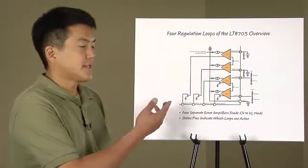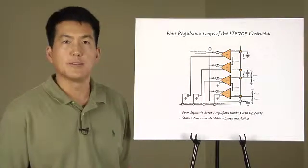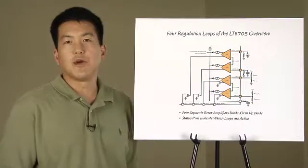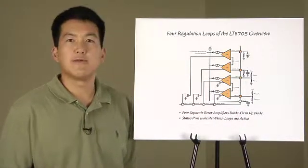Open drain status pins indicate which feedback loops are active at any particular moment. These can be used to drive LEDs for easy indication of what the LT8705 is doing.